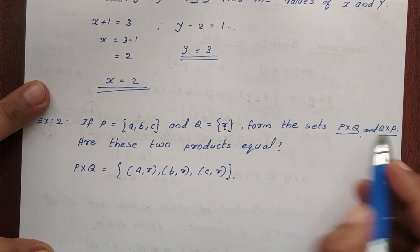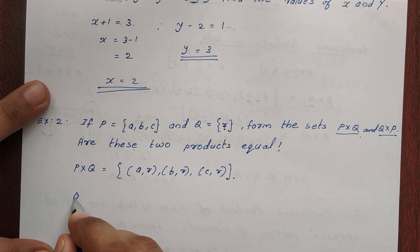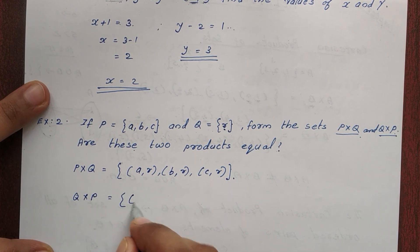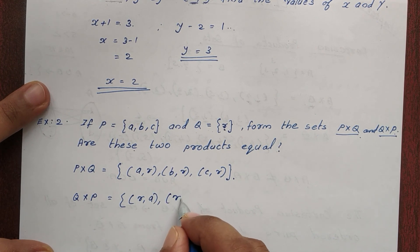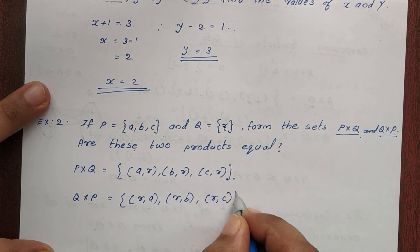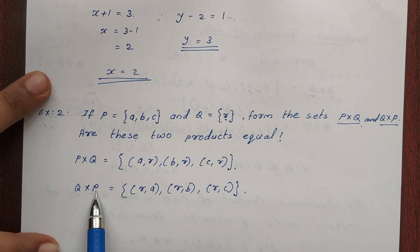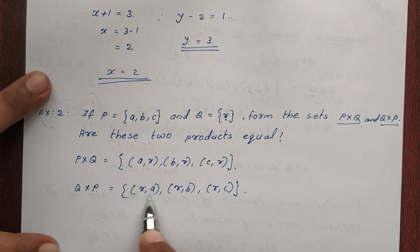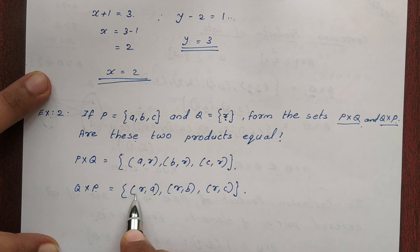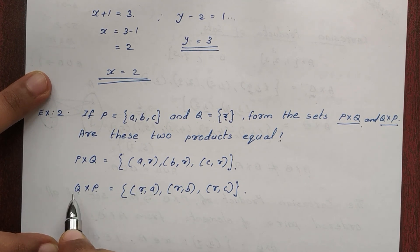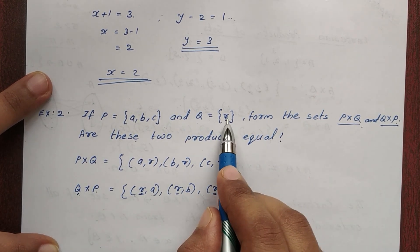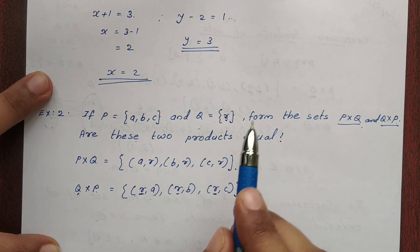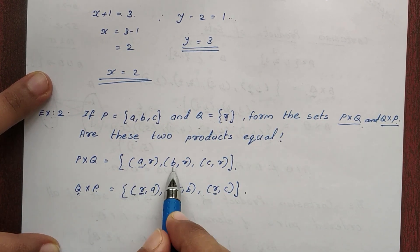Then Q×P = {(R,A), (R,B), (R,C)}. So Q×P has first element R and second elements A, B, C.